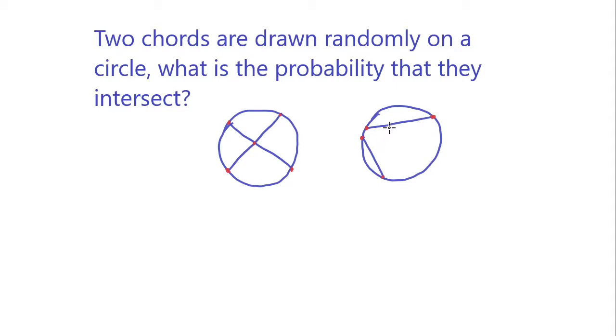So the question is asking what's the probability that these arbitrary two chords will intersect. If you actually try to formulate this problem as a geometry problem, it's actually quite hard. The key to know is it doesn't really matter where these four points are.